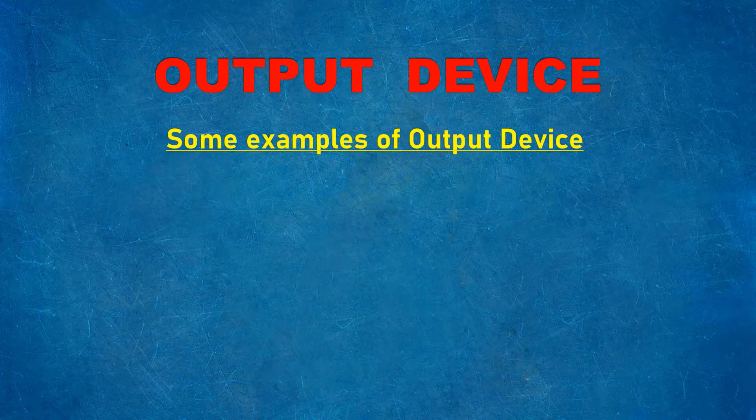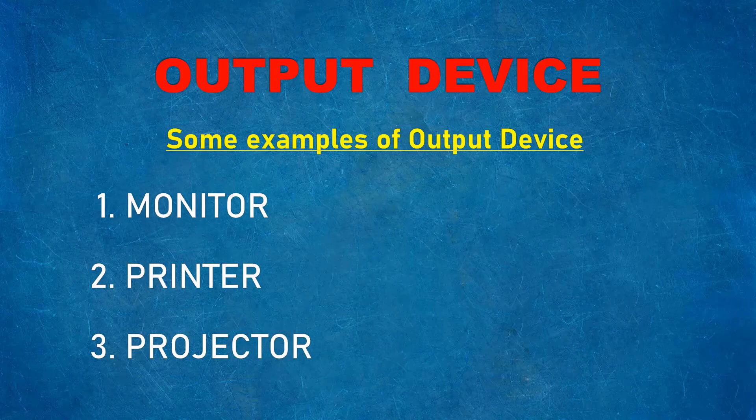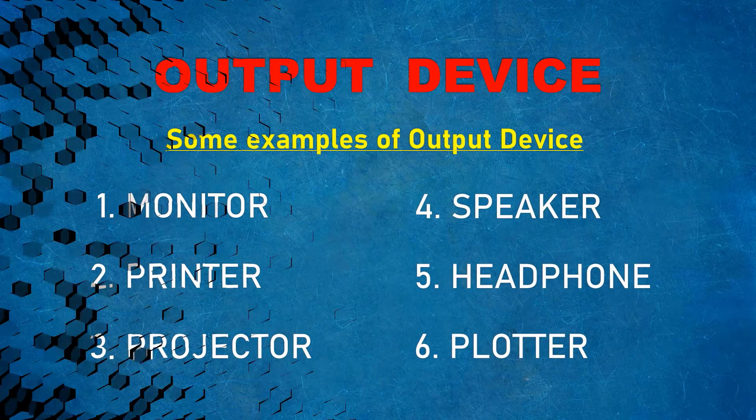Now let's see some examples of output devices: Monitor, Printer, Projector, Speaker, Headphone, and Plotter.